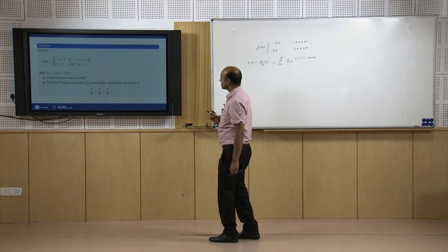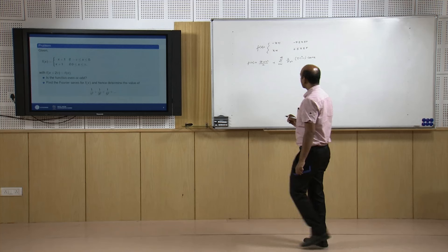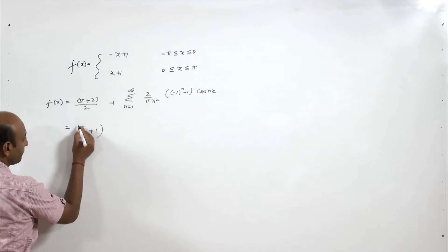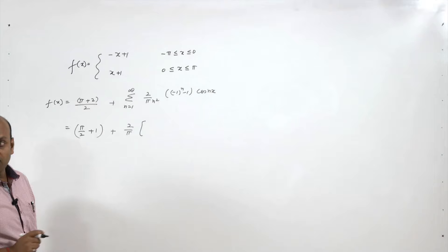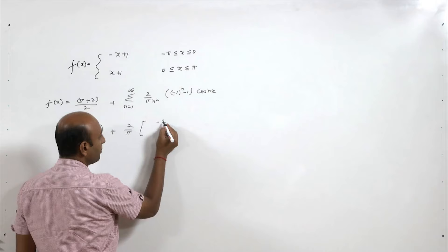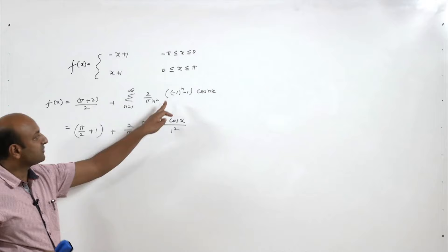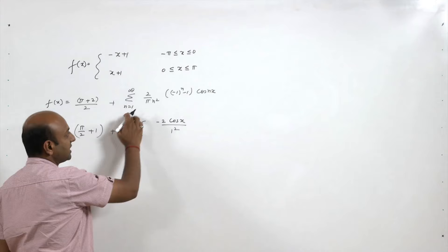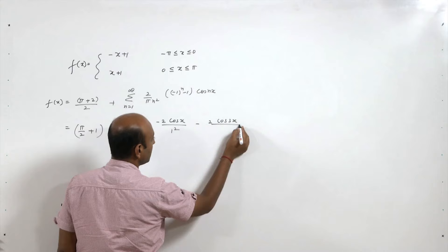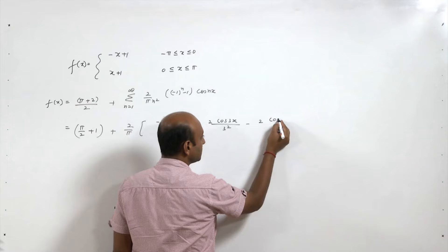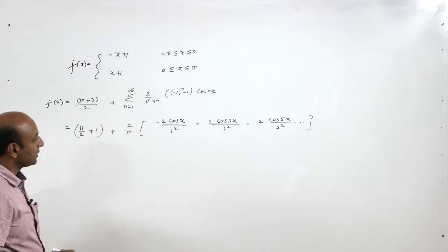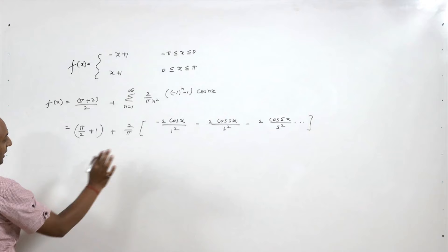We want to determine the value of the series 1/1² + 1/3² + 1/5² + … Opening the summation: when n is odd aₙ = -4/(πn²) giving terms -2cos(x)/1², and when n is even aₙ = 0. So the series only contains odd terms: f(x) = (π/2 + 1) - (4/π)[cos(x)/1² + cos(3x)/3² + cos(5x)/5² + …].